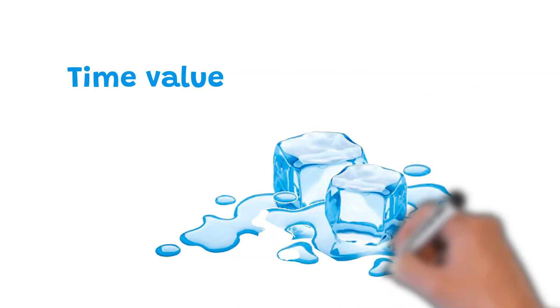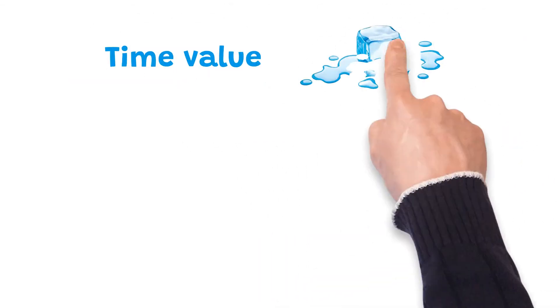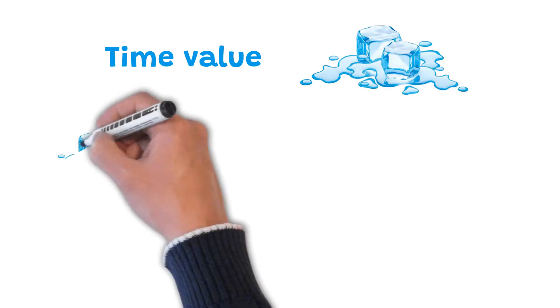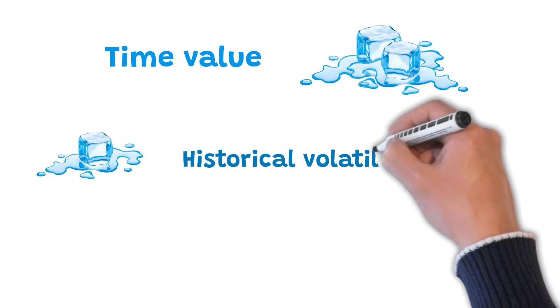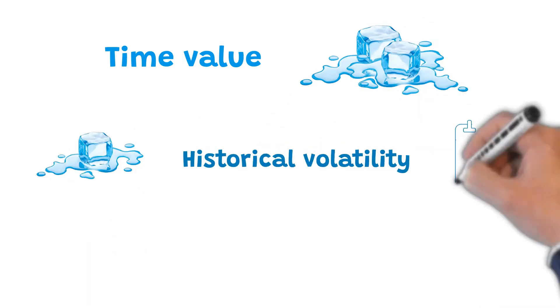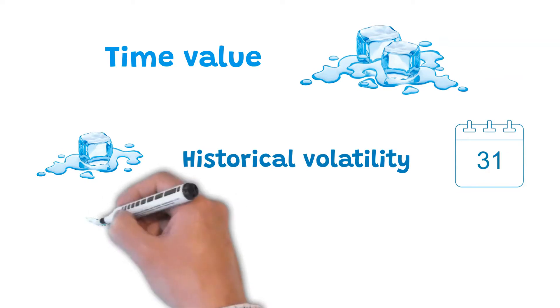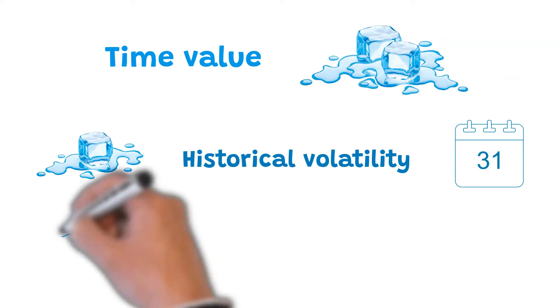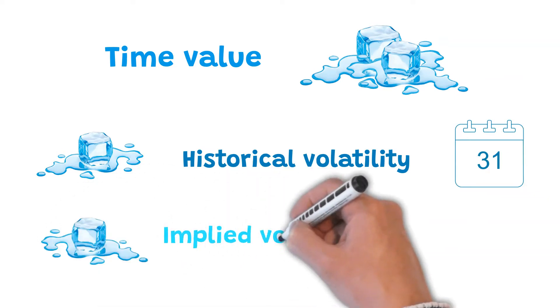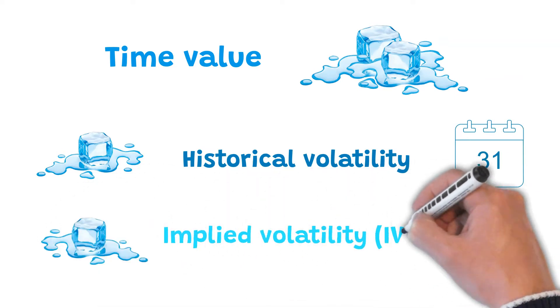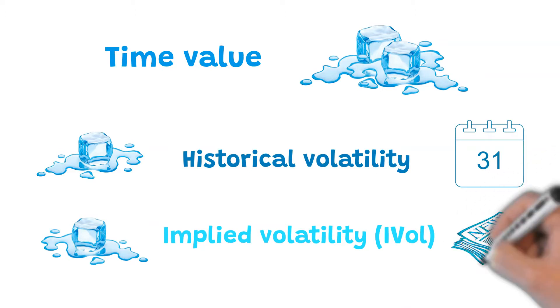Let's now go deeper into time value, what we call the ice cube, since it melts over time. Time value consists of two parts. First, historical volatility, which is a reflection of the volatility of the underlying stock during the previous 52 weeks. Second, implied volatility, the only variable component — it reflects the uncertainty of any future news.